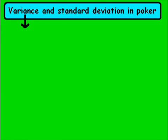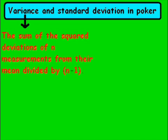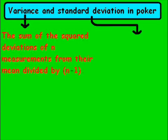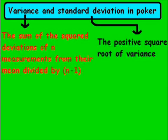To start off, we're going to look at variance. The variance is simply the sum of the squared deviations of n measurements from their mean, divided by n minus 1. We're going to take a look at how to calculate that in just a minute or two. Next, we're going to take a look at the standard deviation. The standard deviation is a lot easier to calculate than the variance — it is simply the positive square root of the variance.